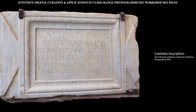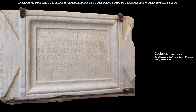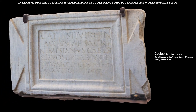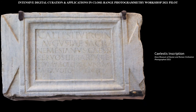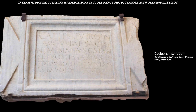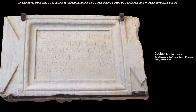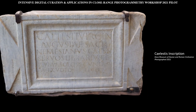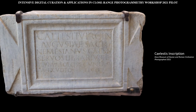This inscription, carved into a thick slab of marble, is dedicated to Caelestis and was likely very prominently displayed near a religious center. Caelestis Virgo is derived from a Carthaginian goddess Tanit and is usually considered an epithet of Juno in Roman mythology, as an aspect of Juno's role as a goddess of childbirth and the wife of the god of the sky.